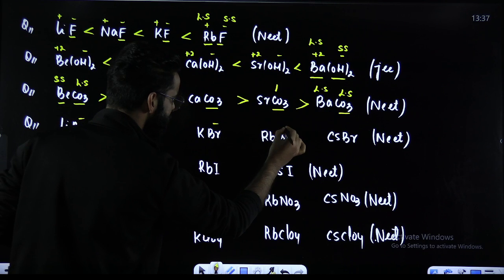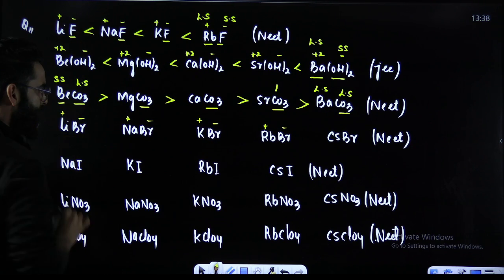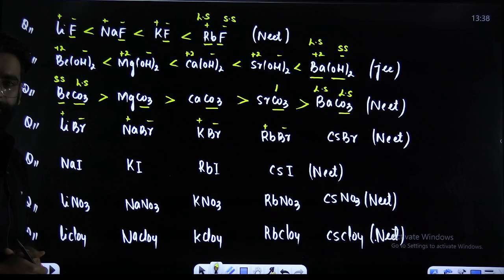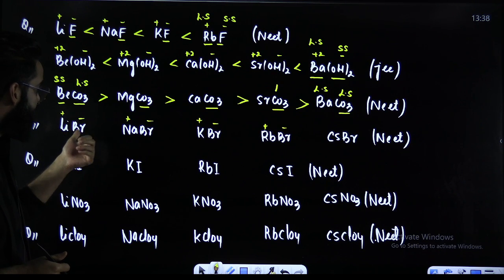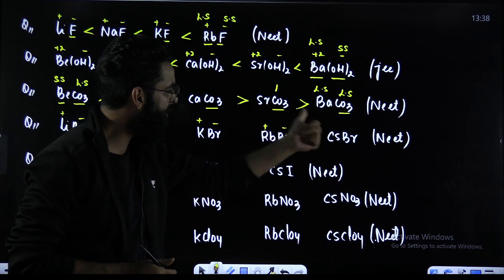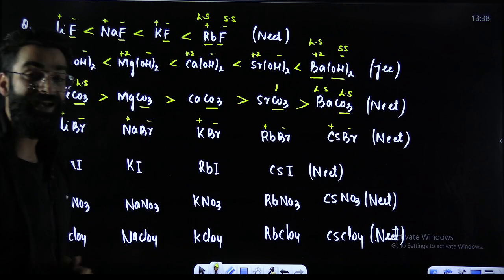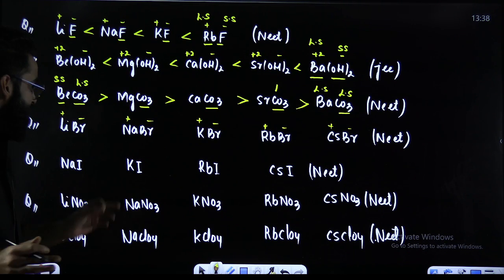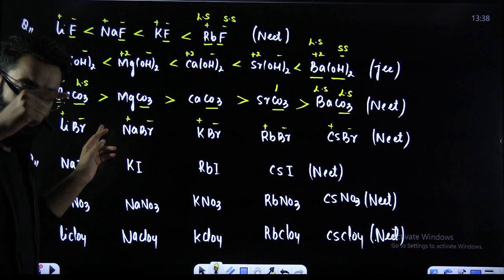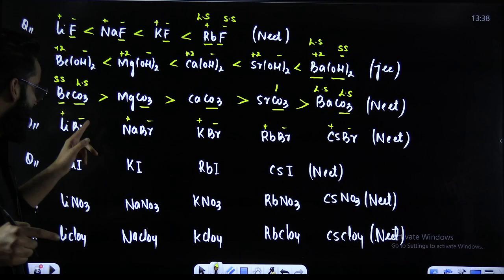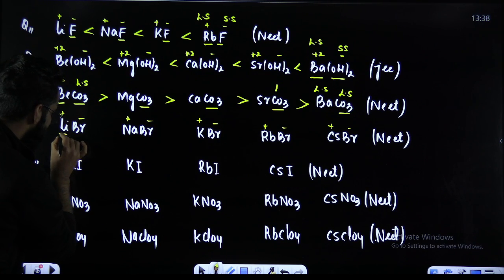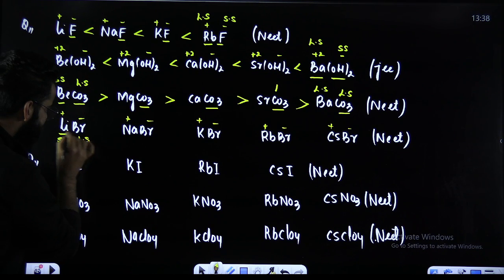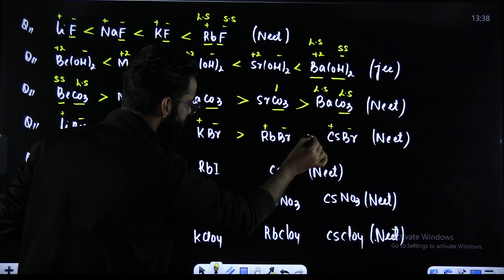Look at the next one: the anion is Br⁻ throughout, and the cations are RbBr, KBr, NaBr, LiBr. Anion is common everywhere. Br⁻ — as you move down group 17, size increases, so Br⁻ is a larger sized anion. Li⁺ is the smaller sized cation. Smaller sized cation paired with larger sized anion means more size difference, so more solubility. More the size difference, more is going to be the solubility.